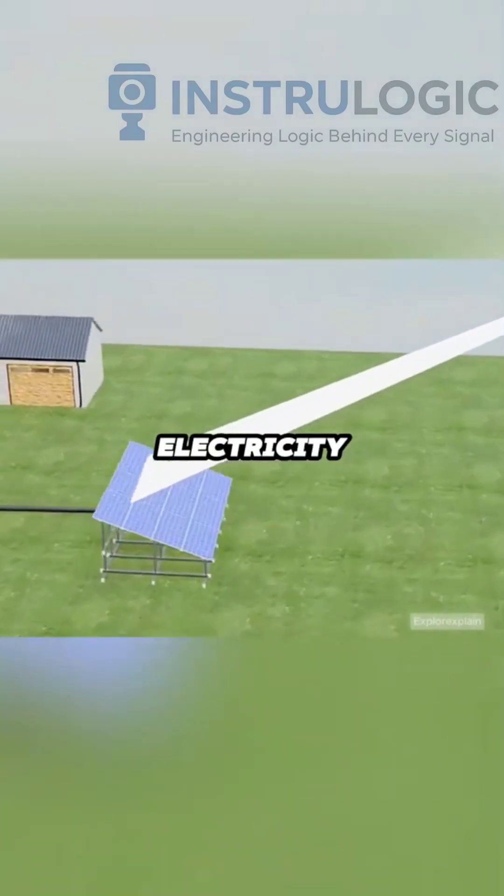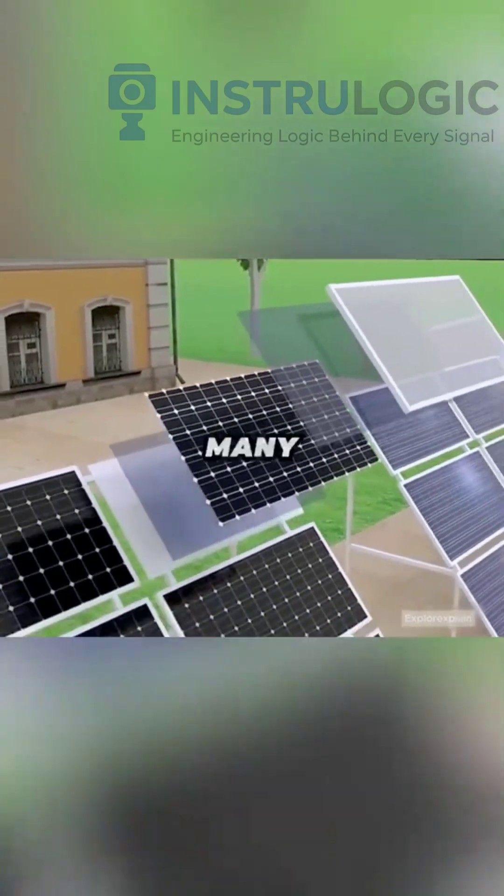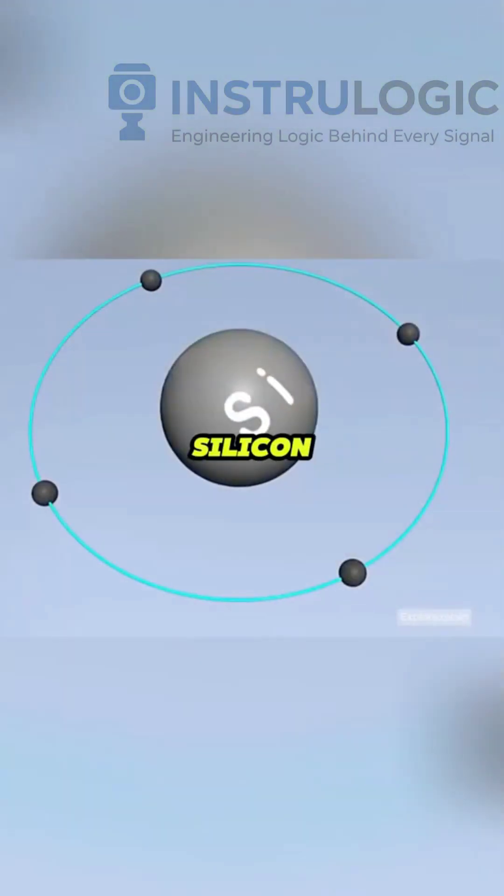Sunlight generates electricity. What's the principle behind solar cells? A solar panel has many layers, but the core is the silicon wafer.